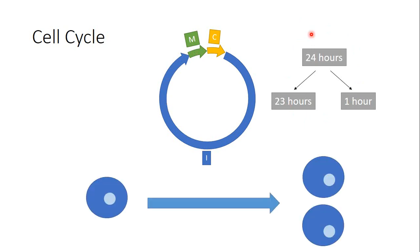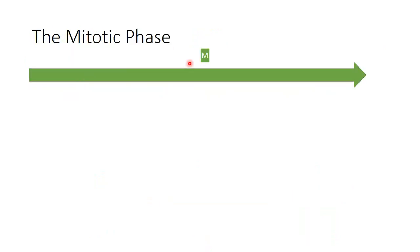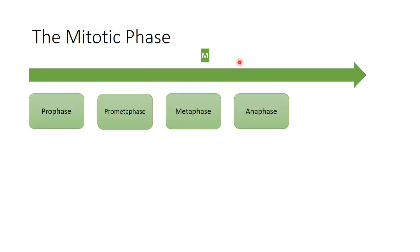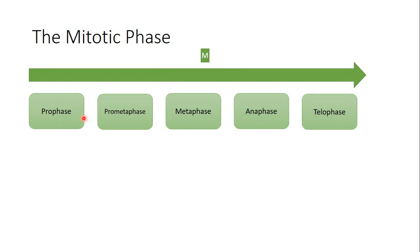At the end of the interphase, we enter the mitotic phase. This mitotic phase consists of five sub-phases: prophase, prometaphase, metaphase, anaphase, and telophase. Even though there are five phases, it's not complicated — just keep in mind that everything happening in the mitotic phase is simply the separation of two sets of DNA into two separated sets.